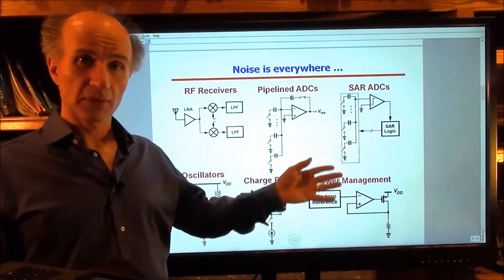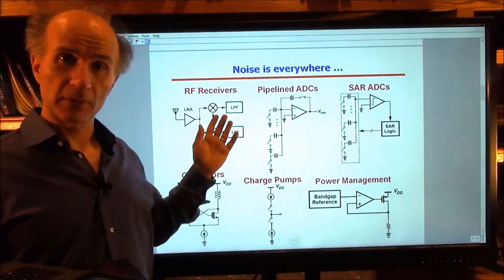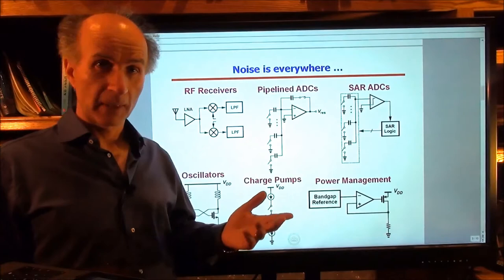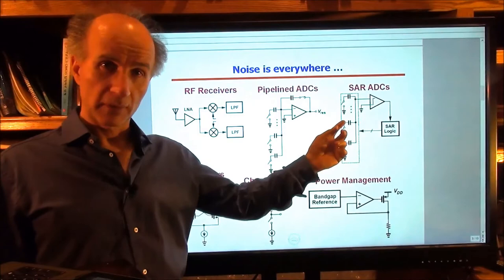In the case of RF receivers, we are dealing with low noise amplifiers, low noise mixers, and baseband circuits. In the case of pipeline A2Ds, we have to worry about the noise of the op-amp and the noise of the switches, which appears as KT over C noise. In the case of SAR A2Ds, we have to worry about the noise of the comparator and the noise of the switches — KT over C noise again.